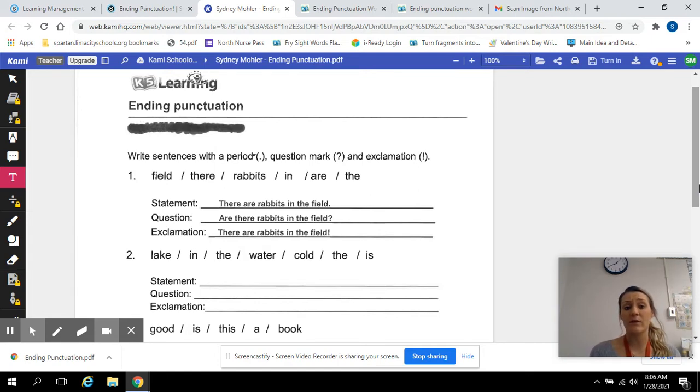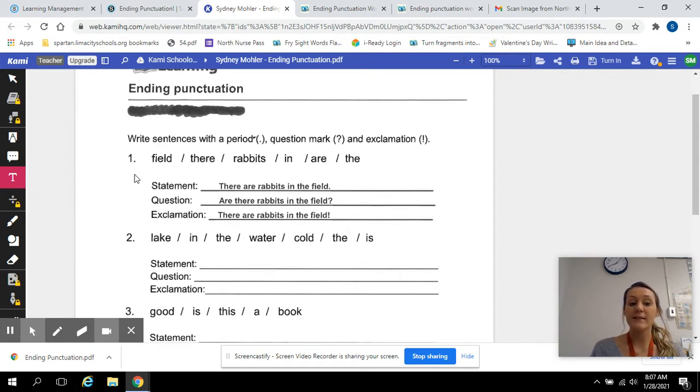We are going to write sentences with a period, a question mark, and an exclamation point. For example, a statement uses a period. If I just say a statement like 'this is a water bottle,' that is a period, that is a statement.